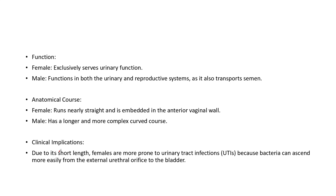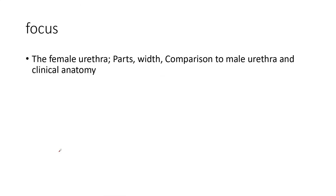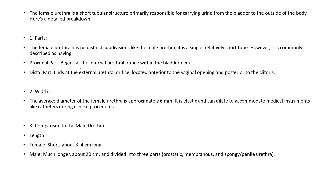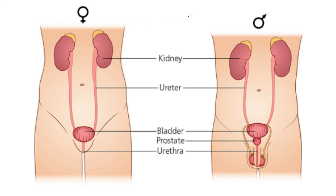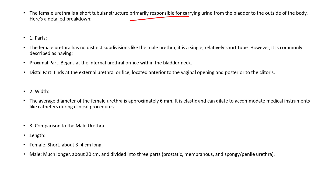For this one, the female urethra is a short tubular structure primarily responsible for passing urine. The male one, on the other hand, you also pass urine through it but it serves additional functions.